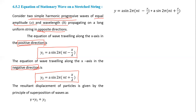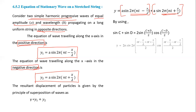The resultant wave is y = y₁ + y₂. We substitute y₁ and y₂ and apply the formula sin C + sin D = 2 sin((C+D)/2) cos((C–D)/2). Here 2A is written since A appears in both terms, and 2π is common. The bracket terms are combined: (nt – x/λ + nt + x/λ)/2, so the x/λ terms cancel and we get 2πnt.